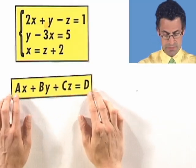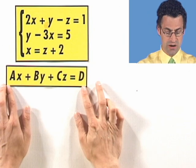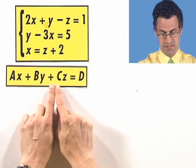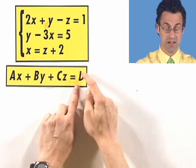So when you're given a mess like this and you want to convert it, the thing to do is to remember that we want to always write things in the form Ax + By + Cz = D, and then the constant.